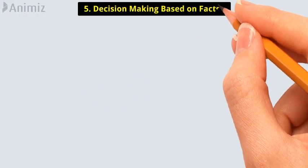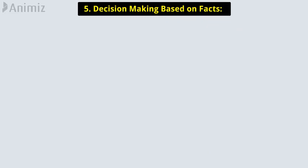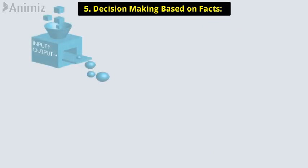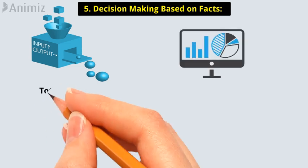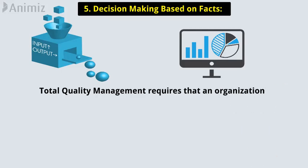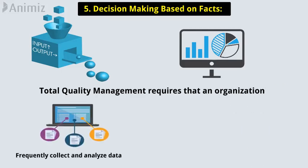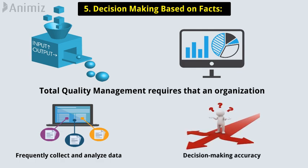Principle 5: Decision-Making Based on Facts. In order to know how well an organization is operating, data on performance measures is mandatory. Total quality management requires that an organization frequently collect and analyze data in order to improve decision-making accuracy.